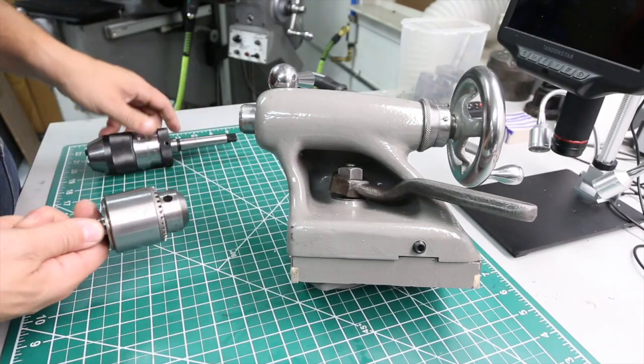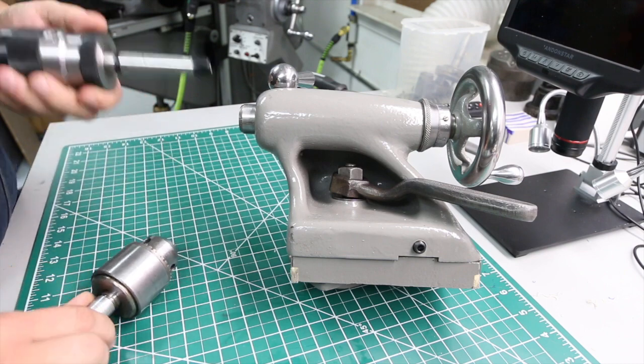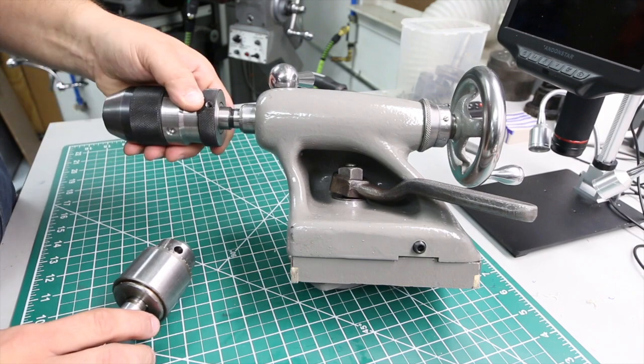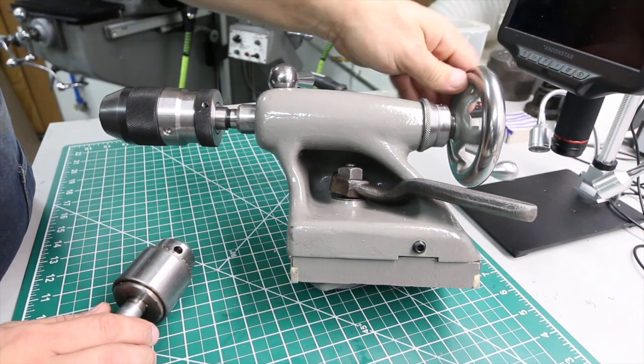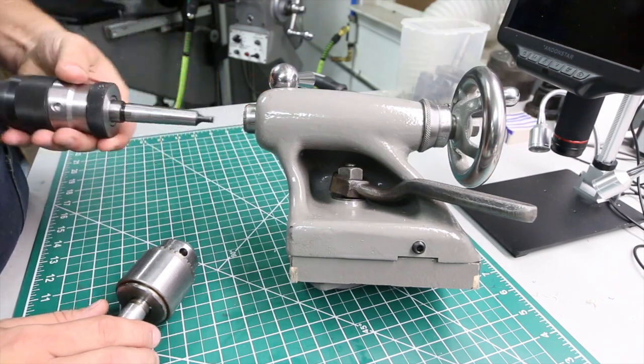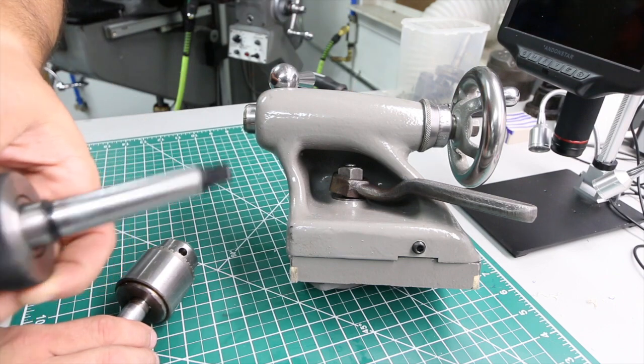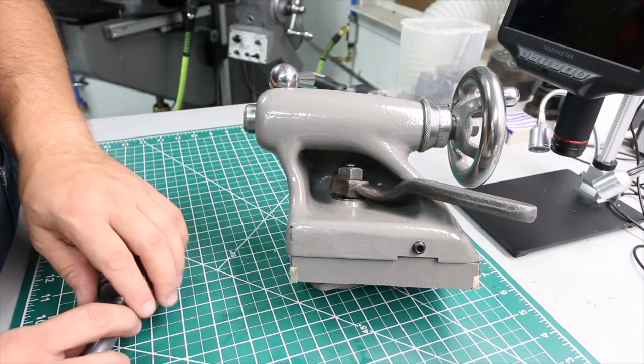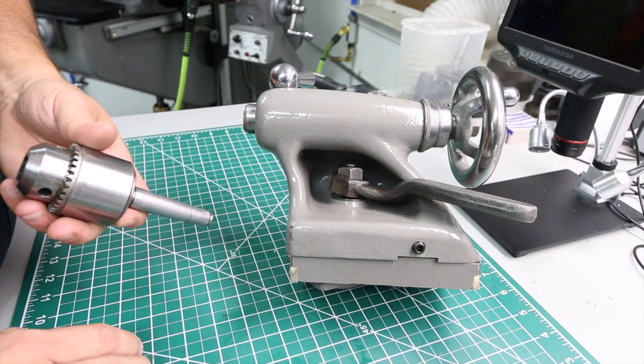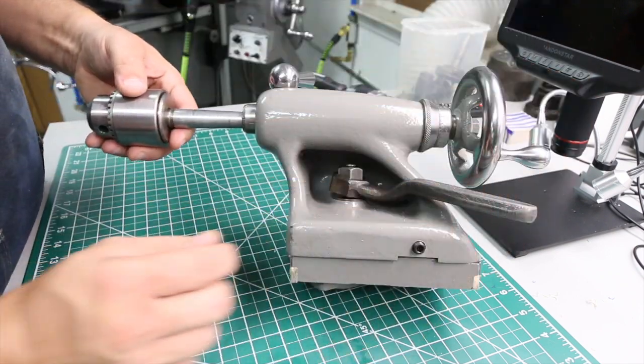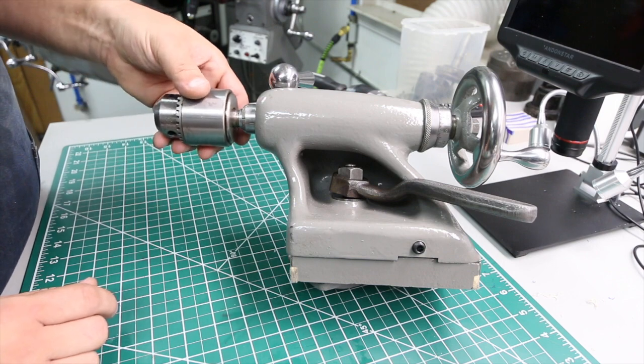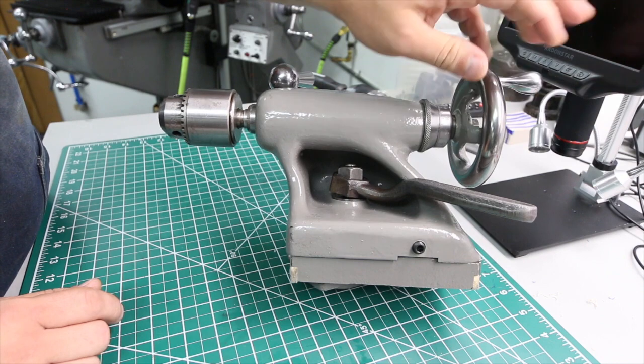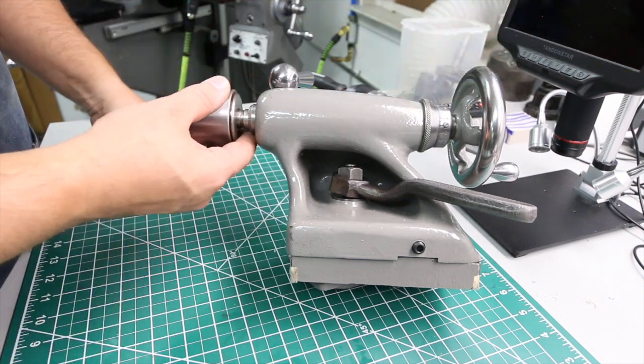Our first tip is around chucks and arbors. We all have seen arbors like this that have a tang on the back. It goes in and when you retract your tail stock, it pushes it right out. Very handy. This is something I learned a long time ago the hard way, but what happens if your arbor doesn't have one? It will get stuck and no matter how much you withdraw your tail stock, it's not going to come out.